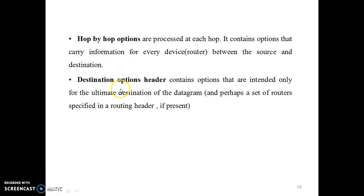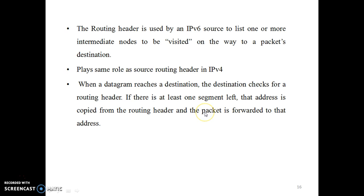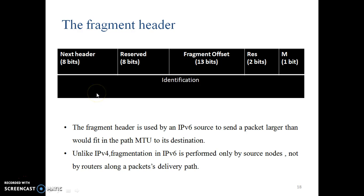The routing header is used by an IPv6 source to list one or more intermediate nodes to be visited on the way to the packet's destination. It plays the same role as the source routing header in IPv4.